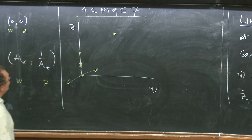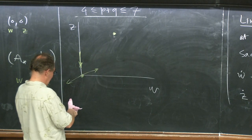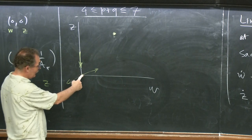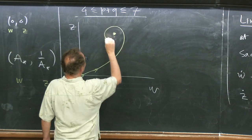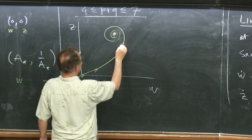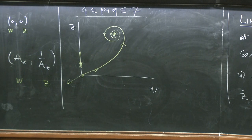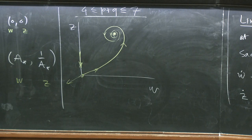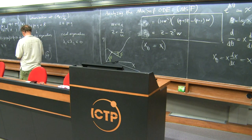Linearizing at the other fixed point (A*, 1/A*) is more complicated and dimension-dependent. If P+Q is less than 8, you get complex eigenvalues -α ± iβ. For the specific case P=Q=2, α = 1/2 and β = (1/2)√7. If P+Q is greater than or equal to 8, both eigenvalues are real and negative.